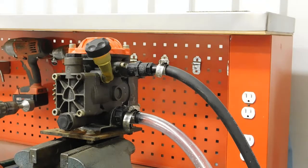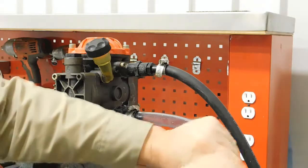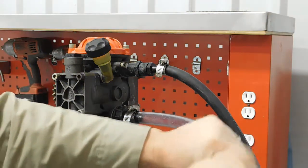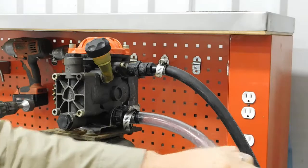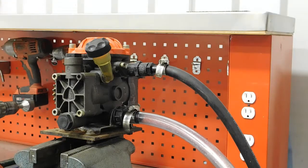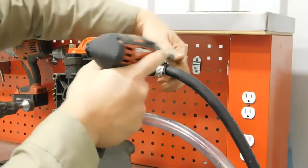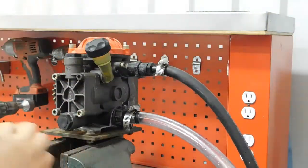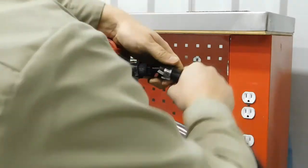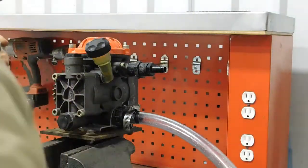Once you're satisfied that you have clean water coming out every row, you can turn the water off and remove the water hose from the bottom. Then loosen your pressure line at the pump, remove it and hold on to the clamp.